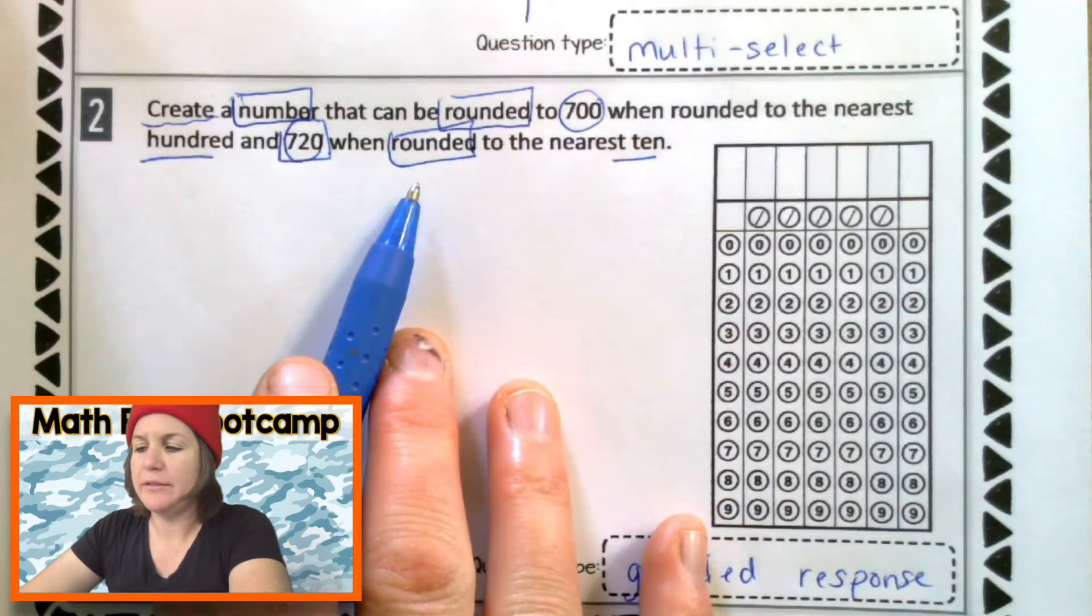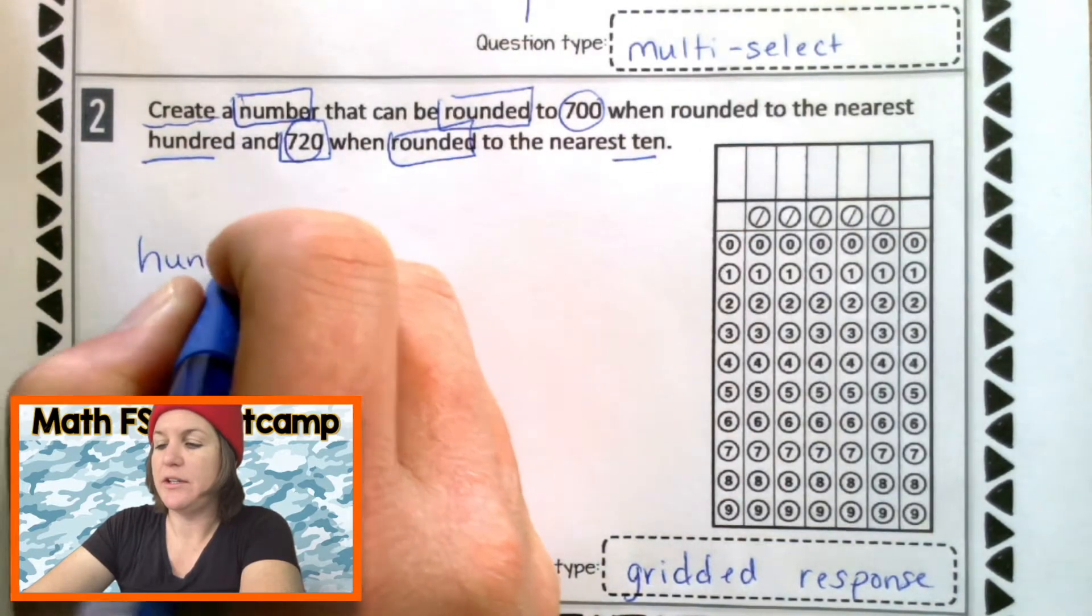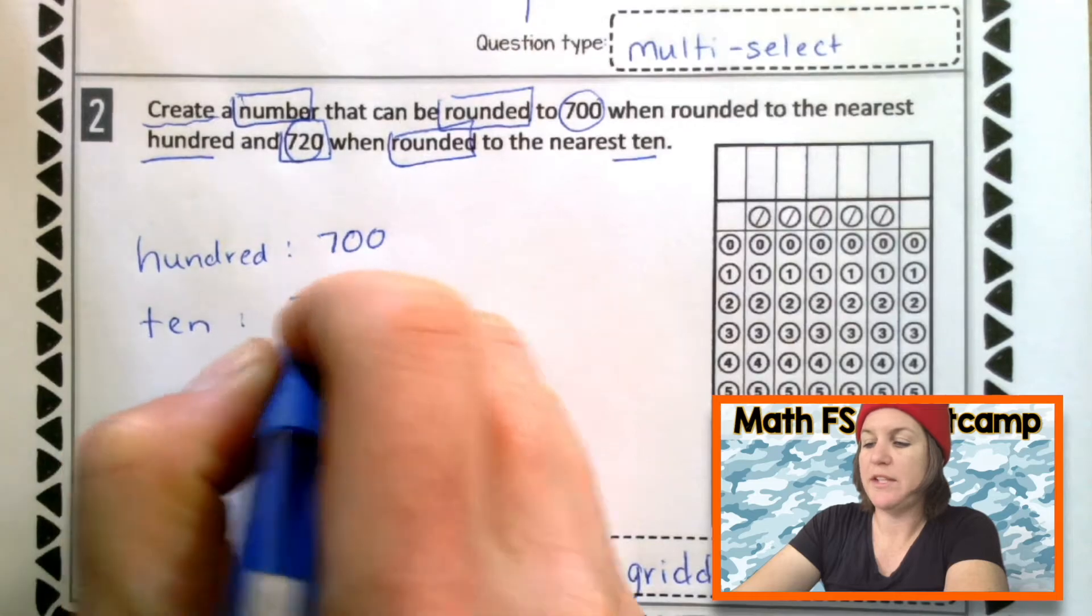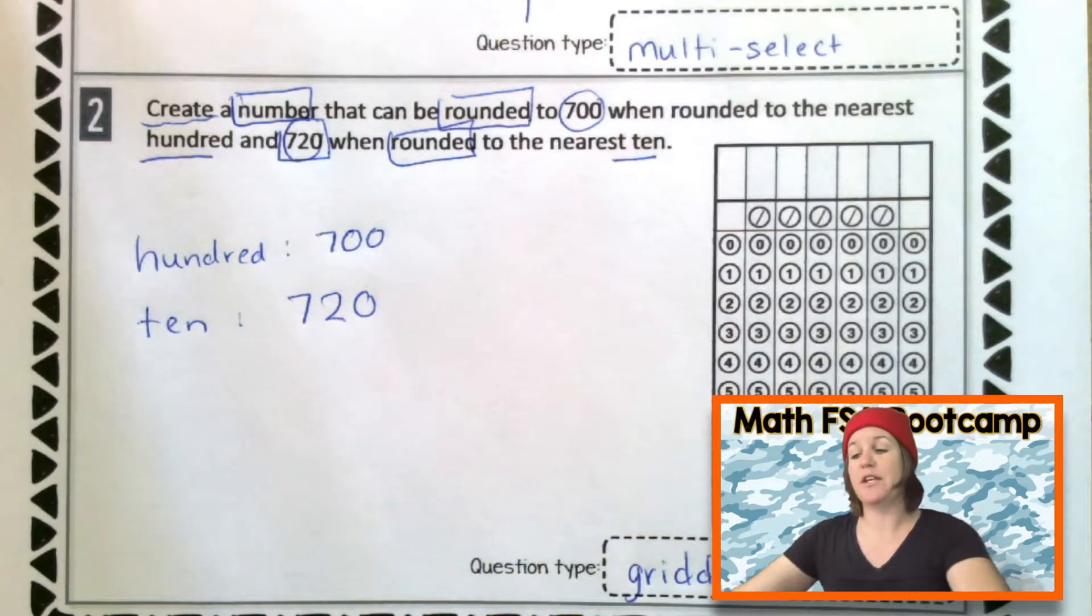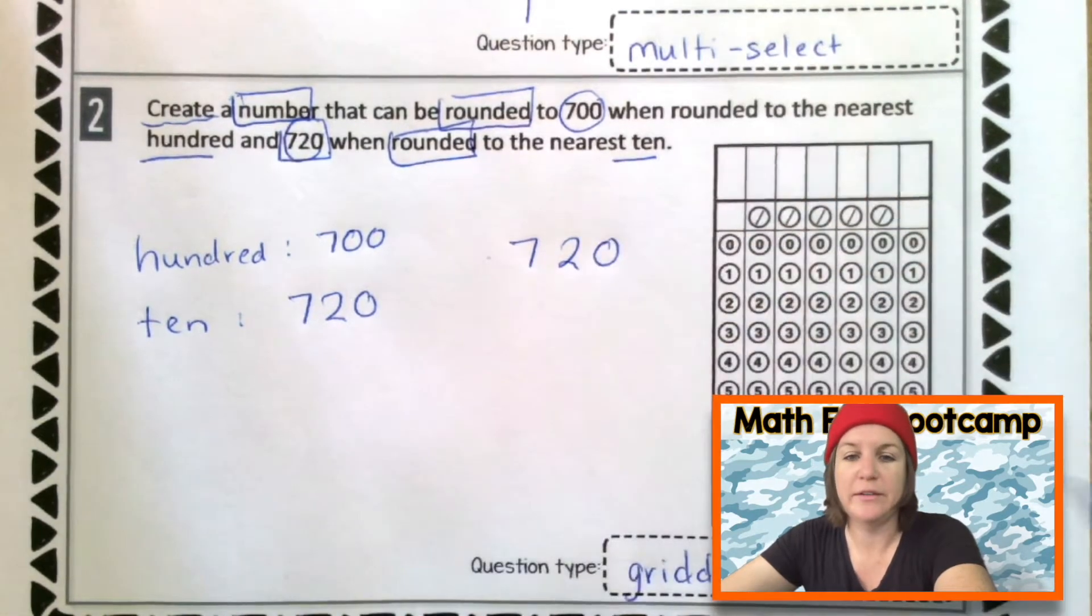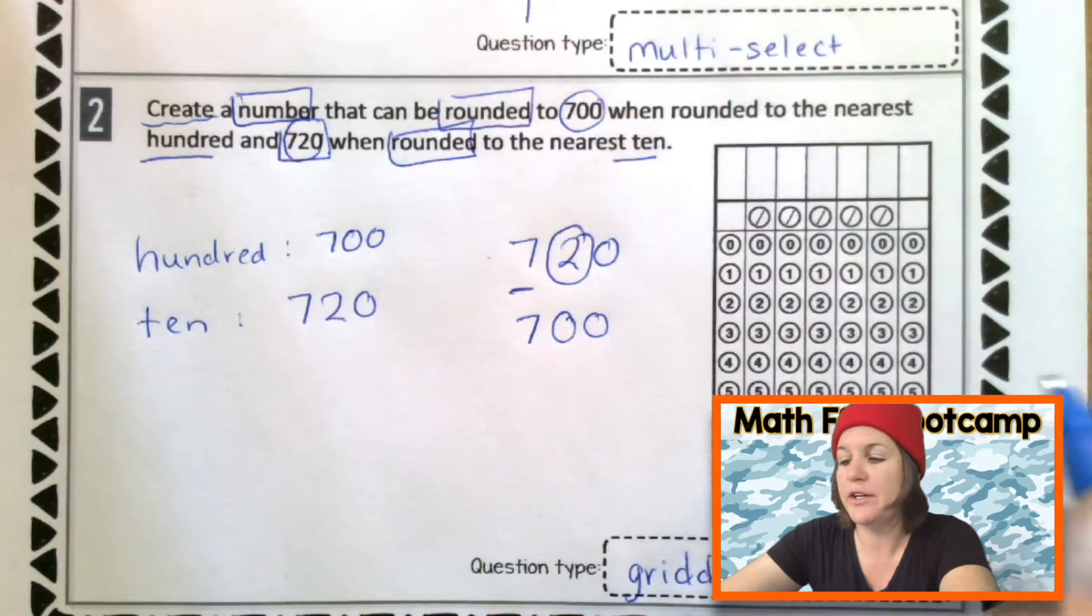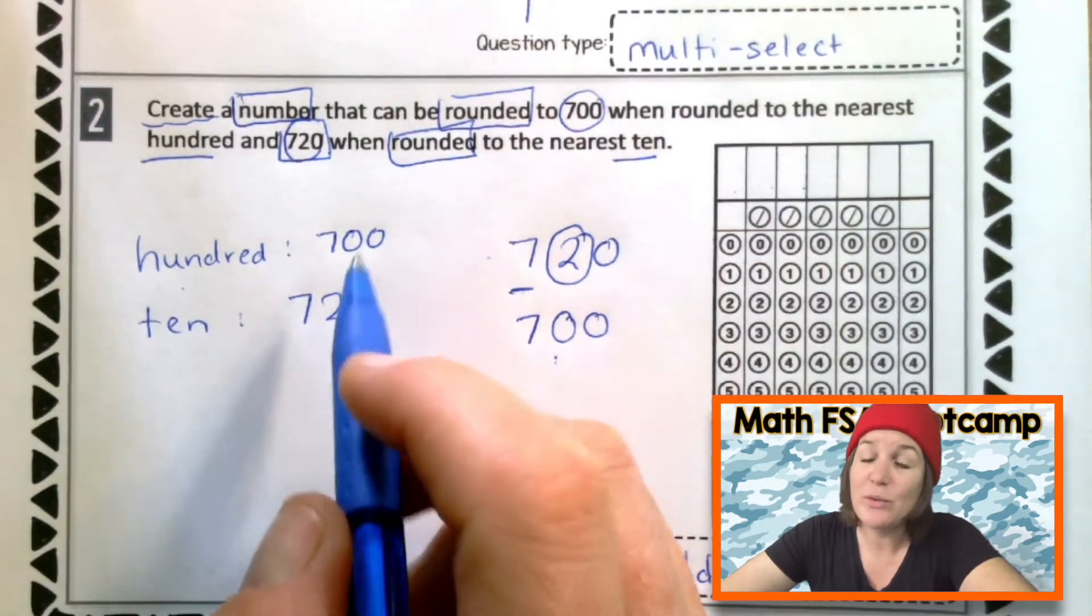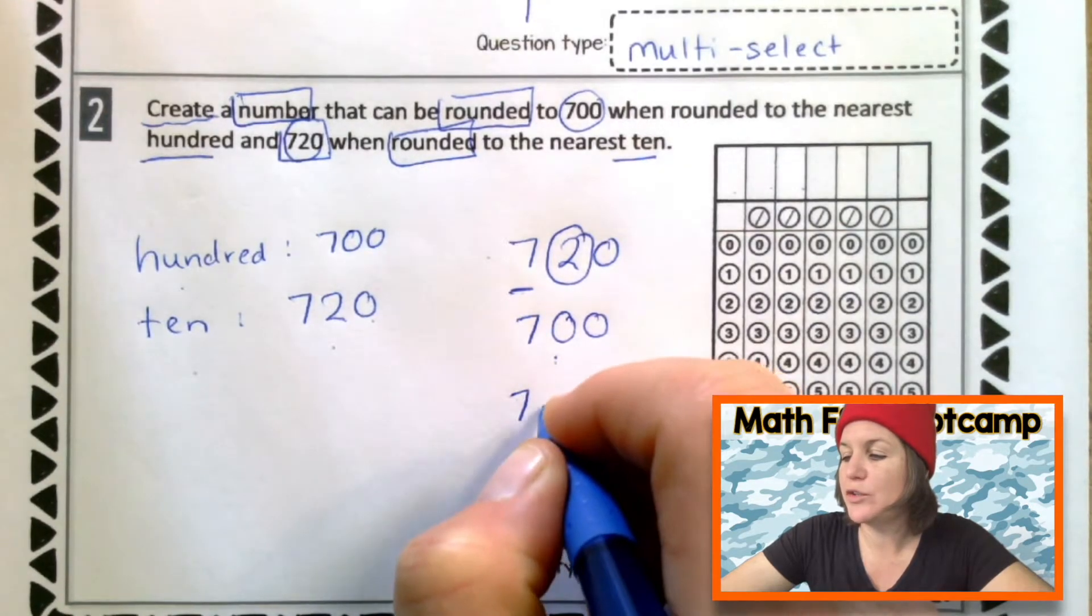So, I need to create a number. Let me jot down what I know from the problem. I need to create a number that can be rounded to 700 when rounded to the nearest hundred. And when I rounded to the nearest ten, it would be 720. But I have to make up my number. So, it might be a little bit different than what you made up. And in fact, this is going to be a range of numbers that you can use. So, here's how I would think about this problem. Well, first, I know that this number right here is 720. If I took 720 and I rounded it to the nearest hundred, that would be 700. So, technically, you could have an answer of 720 there. Because 720 rounds to 700 when you round to the nearest hundred. 720 also rounds to 720 when you round to the nearest ten. But I'm going to take it up a notch.